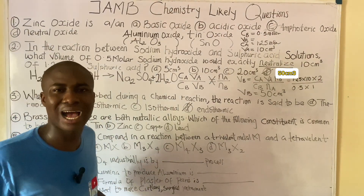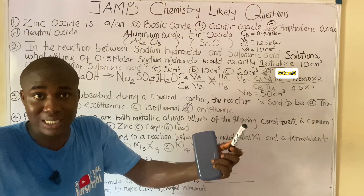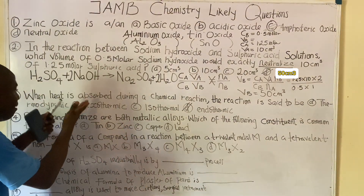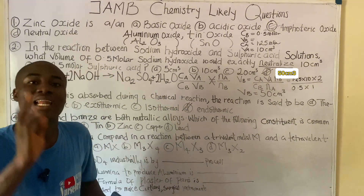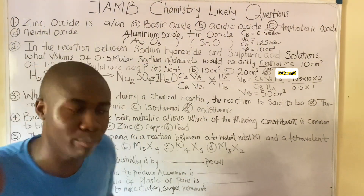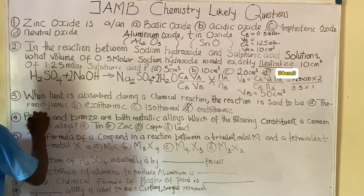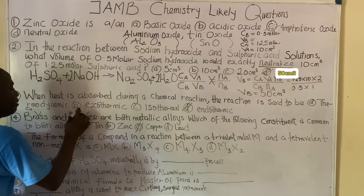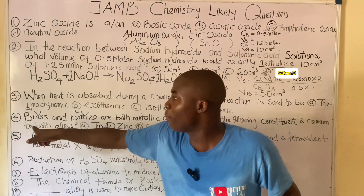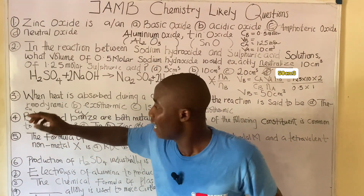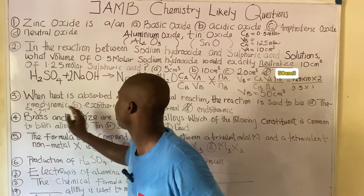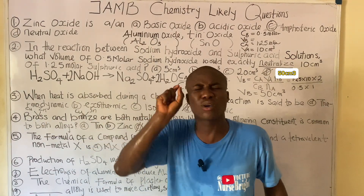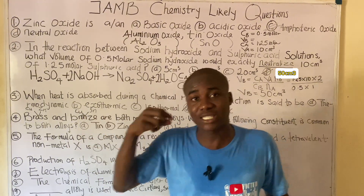Question four: Brass and bronze are both metallic alloys — mixtures formed by a metal and other elements. The element common to both is copper. The components of brass are copper and zinc; the components of bronze are copper and tin (Sn).